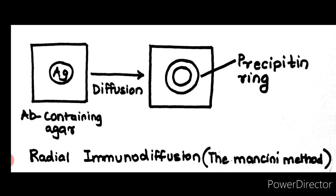The area of the precipitating ring is proportional to the concentration of antigen. By comparing the area of the precipitating ring with a standard curve obtained by measuring the precipitating areas of known concentrations of the antigen, the concentration of the antigen sample can be determined.